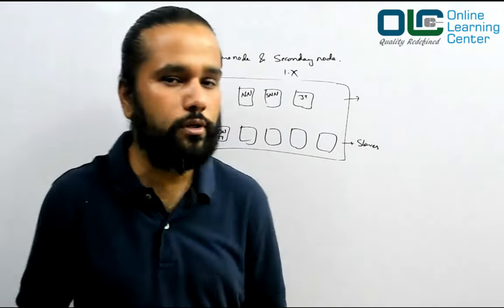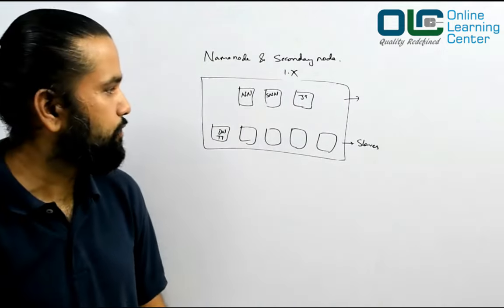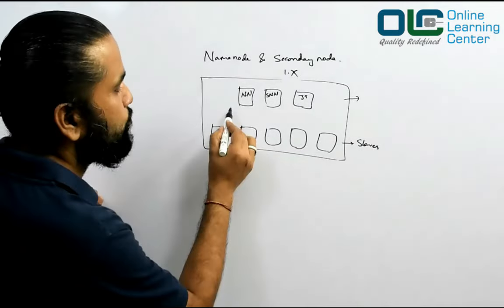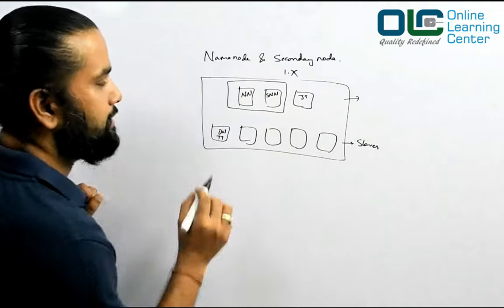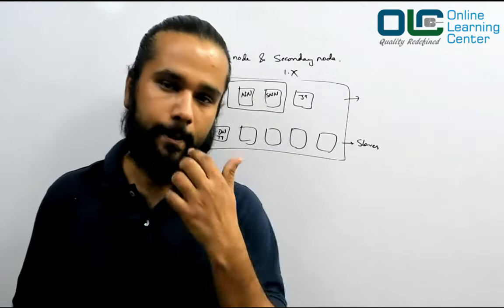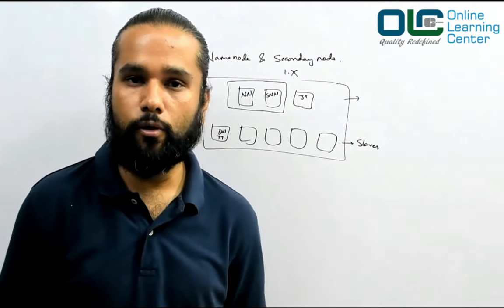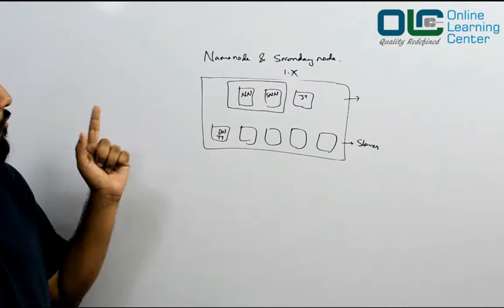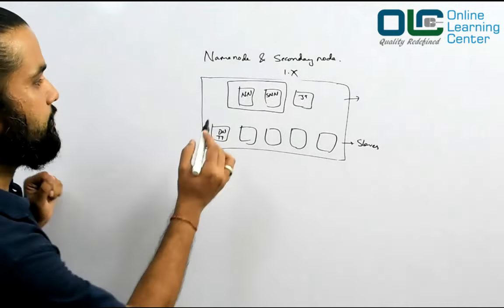We'll move forward and discuss Hadoop 2 and 3 later, but let us stick to this for now. Today we are going to talk about name node and secondary name node — what exactly they are. Is the secondary name node a backup of the name node, or how exactly does it work? Let us try to understand. We know that the name node maintains a register.